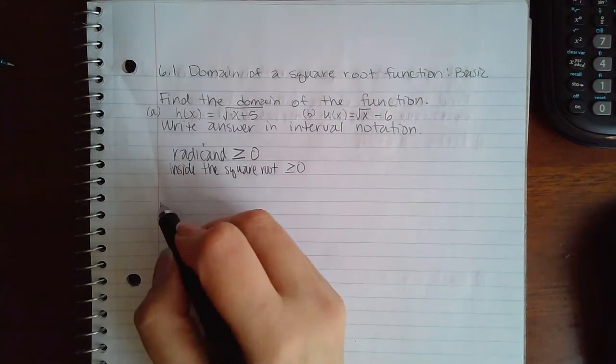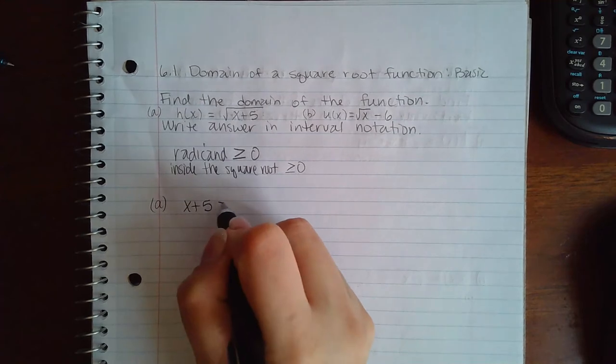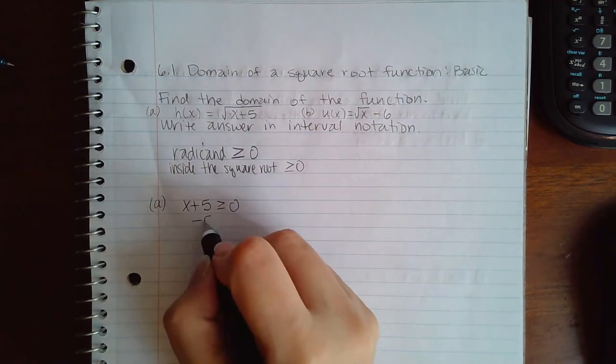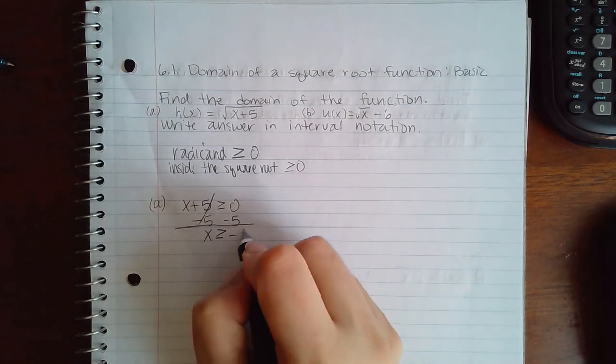So in part a, the inside of the square root is x plus 5, and that has to be greater than or equal to zero. And if I solve for x here, it means that x has to be greater than or equal to negative 5.